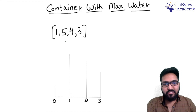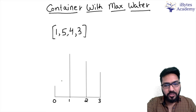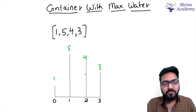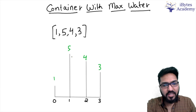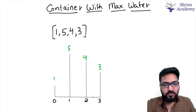The problem is that we will be given an array of numbers — in this case 1, 5, 4, and 3. Assume these numbers are the lengths of bars. So the first bar has length 1, then 5, then 4, and then 3. Using any two bars and the base, we can form a container, and we have to find which container gives us maximum water.